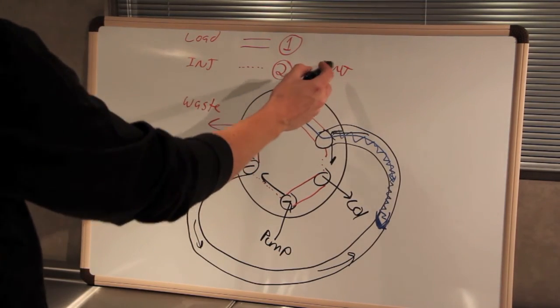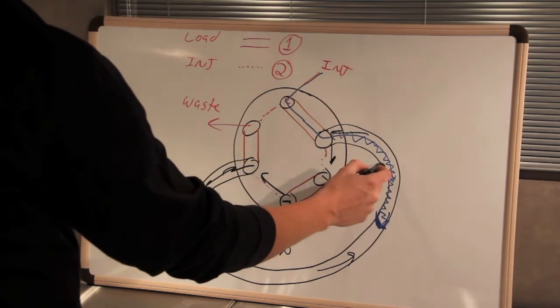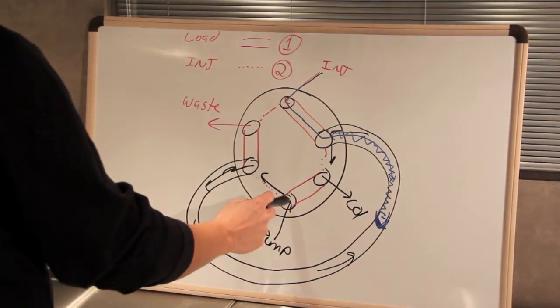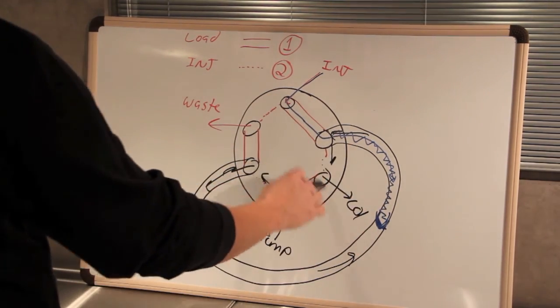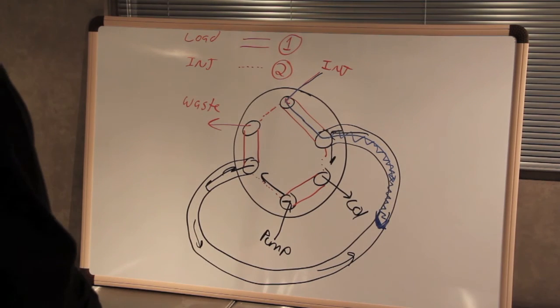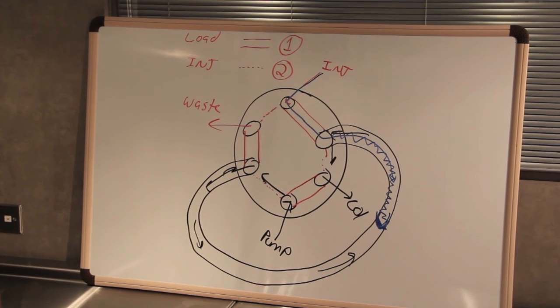So you can see that when you load it you load in this direction and when you inject it it'll back flush the loop onto the column. Thank you for your time and I hope you found this helpful.